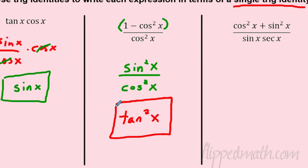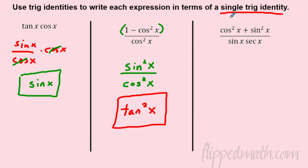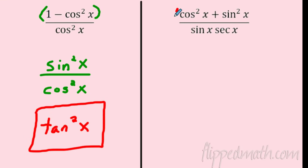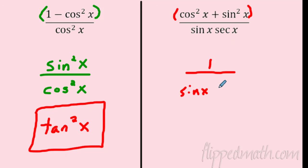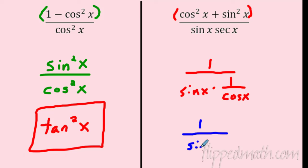Let's try one more. If you see (cosine² + sine²) on top, that's just one by the Pythagorean identity. On the bottom, rewrite secant as one over cosine. So we have one divided by (sine times one over cosine), which is one divided by sine over cosine.